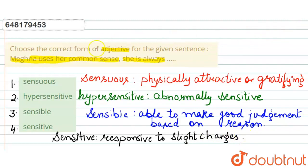Ab hum dikhenge, hummara kun sa isme se suitable one hai. Meghna uses her common sense. Meghna apani common sense ko use karti. Matlab wo har kaam ko ek reason ke saath mein chelti hai. To she is always what? She is always sensible. Means she is able to make good judgment based on reason, as she uses her common sense. This is why our answer will be sensible, which is option three. I hope you understand this. Thank you very much.